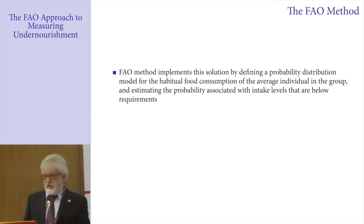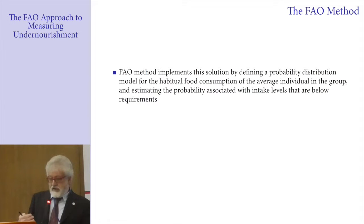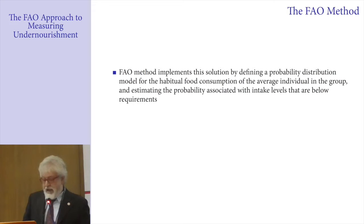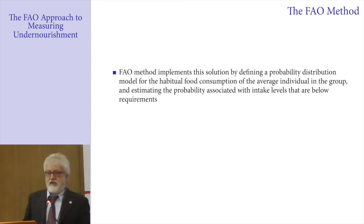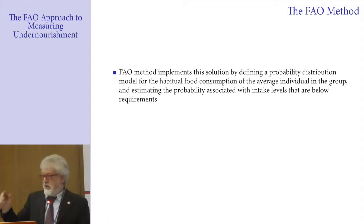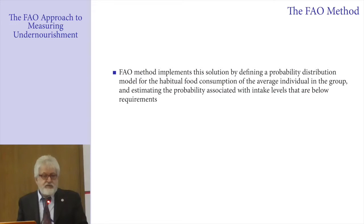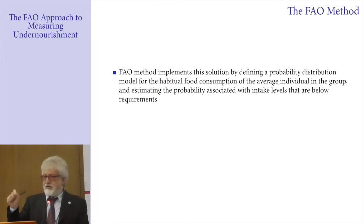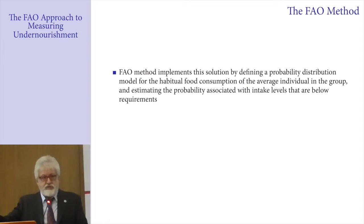The FAO method defines a probability distribution model for the habitual food consumption of the average individual in the group. The average individual in the group is a fictional statistical character — an individual who is both man and woman at the same time, with the entire distribution of age, physical activity level, and height. The probability distribution tells us the probability of observing a certain level of habitual food consumption — regular food consumption — as the normal situation of this statistical individual.